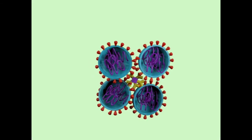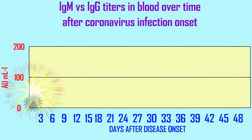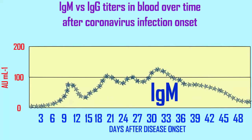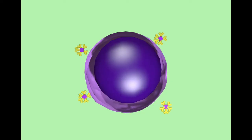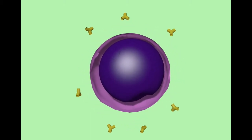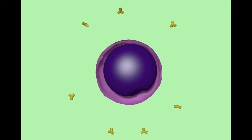IgM is the antibody that tends to be produced early in an infection. Its production peaks within the first month of infection and declines afterwards. Therefore, one can identify someone who has recently been exposed to coronavirus if they are making IgM antibodies against it.